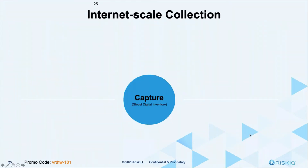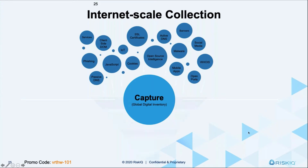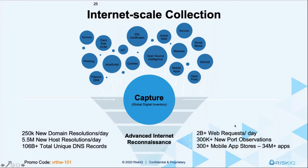This next slide talks through just the volume of data we've collected over time. Since we were founded, we've captured over five petabytes of data. From a daily perspective, we're observing 250,000 new domains that are resolving to IPs per day, 5.5 million new hosts resolving to IPs on a daily basis, and we're seeing over 106 billion total unique DNS records as well.